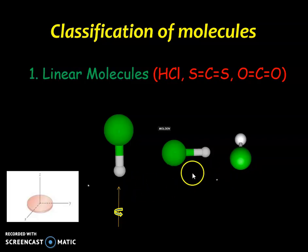As the end over end rotation gives the same moment of inertia, for linear molecules, Ia equal to 0 and Ib equal to Ic.